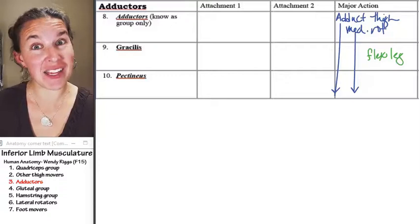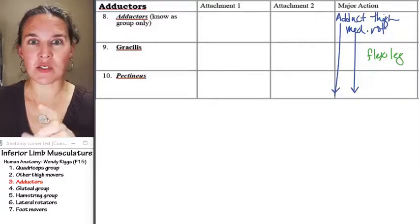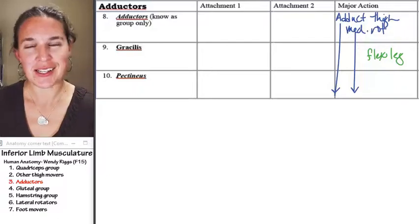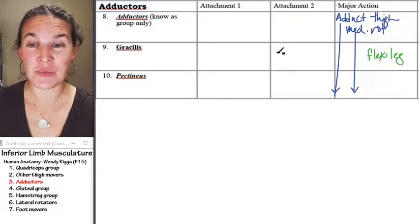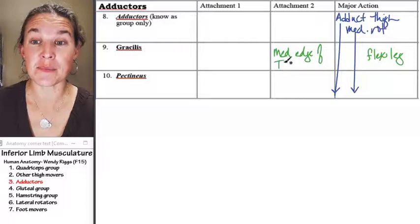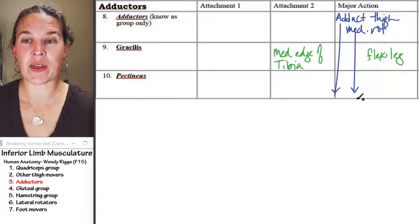One of its attachments has to be on a leg bone. Gracilis, in order to flex the leg, has to cross the knee joint. So it actually has an attachment on the medial edge of the tibia, near the tibial tuberosity, not quite all the way there.